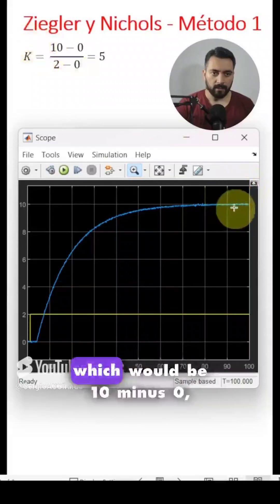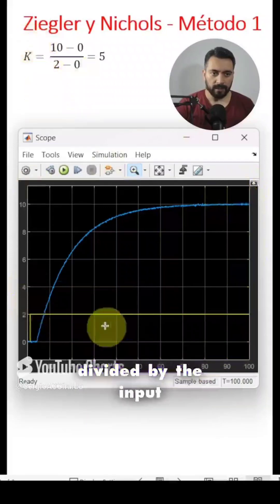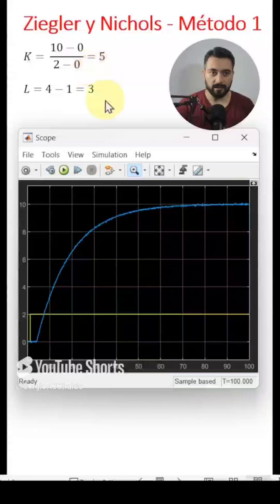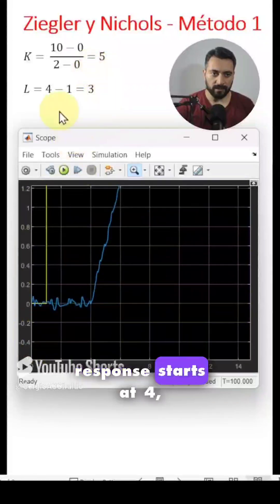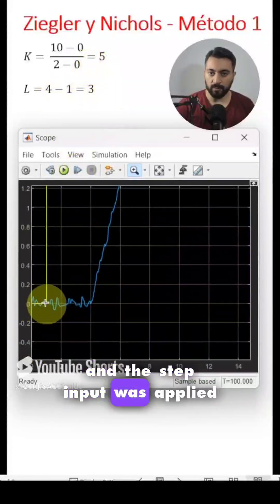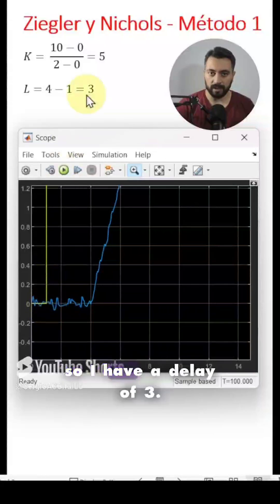I calculate the gain, which would be 10 minus 0, divided by the input 2 minus 0, which is 5. For the delay, the response starts at 4, and the step input was applied at minute 1, so I have a delay of 3.